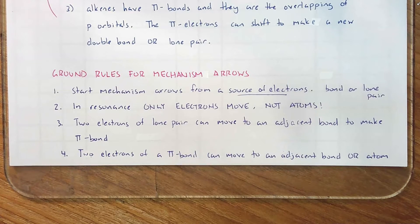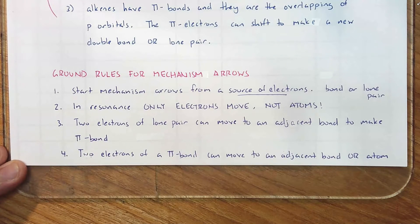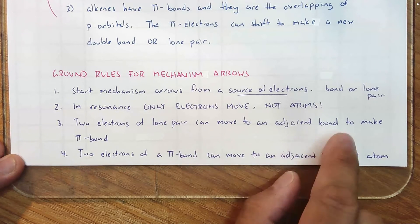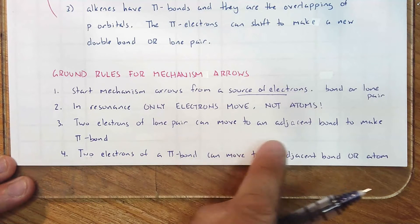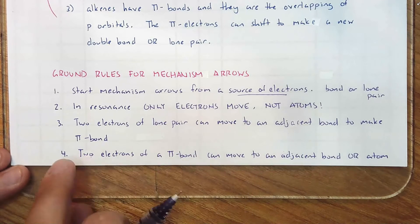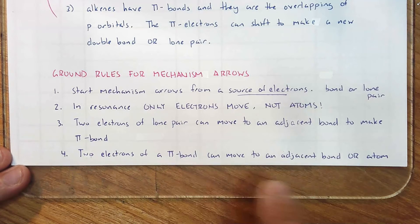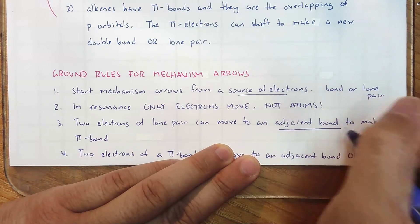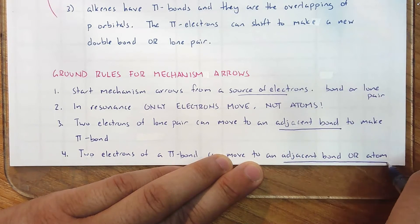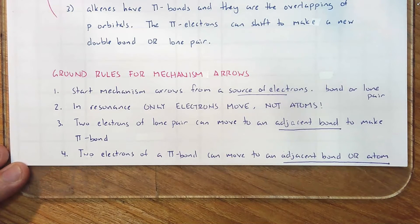Points three and four are very important because there are rules for where you can draw the end of a mechanism arrow. If you have two electrons of a lone pair, that can move only to the adjacent bond to make a pi bond. You can't take a lone pair and have it travel all the way across the molecule. And number four: you can move the electrons of a pi bond to the adjacent bond or to an atom to form most likely an anionic charge. These are the two movements you will be doing with mechanism arrows — moving lone pairs and electrons of pi bonds — but you have to follow these two rules.